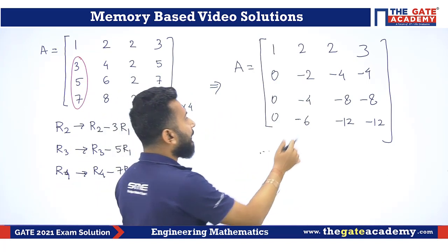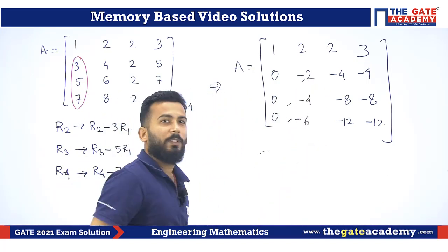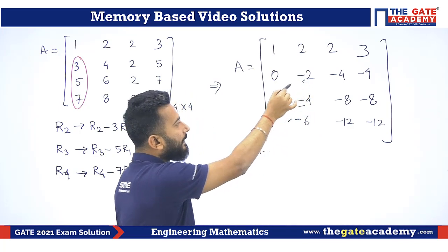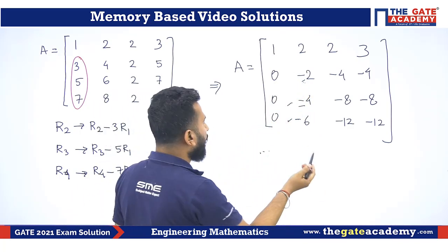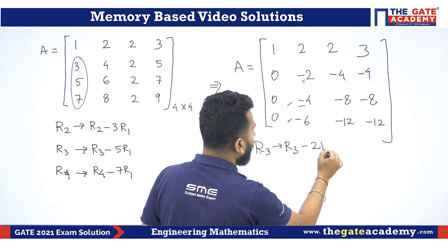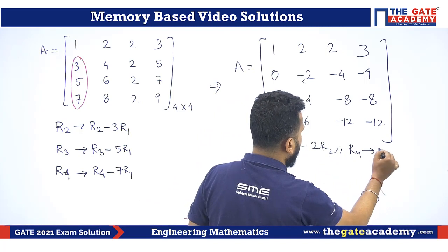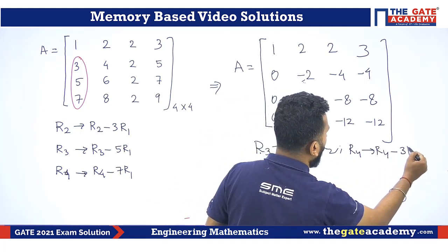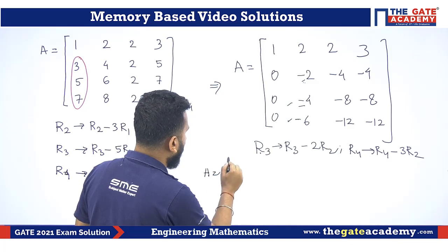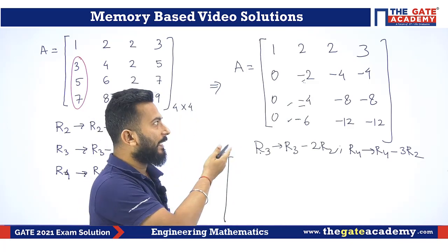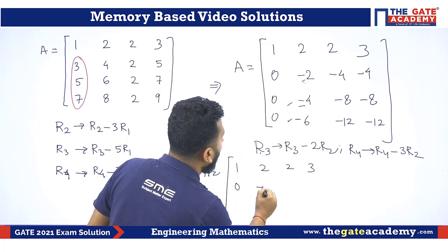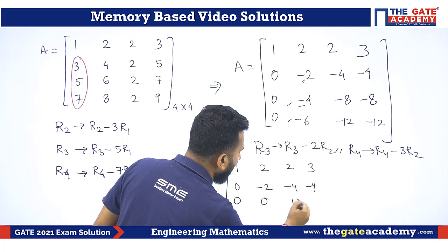Clearly you can see that these two rows are dependent on this row. If you multiply by 2 in this row, you will get the third row and if you multiply by 3 in the second row, you will be getting the fourth row. So clearly you can see, although I am writing the operations, R3 is equal to R3 minus 2 times of R2 and R4 is equal to R4 minus 3 times of R2. If you use these two operations, directly your third and fourth row will get 0. It is not even needed to check individual elements. You can clearly find out. So clearly this is 1, 2, 2, 3, 0, minus 2, minus 4, minus 4 and you can make all these elements as 0.